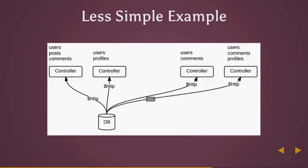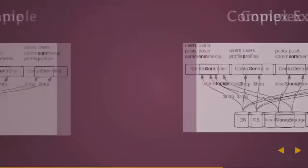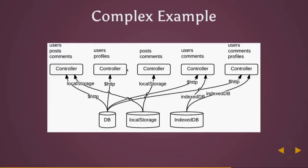As this example app grows in complexity, you're adding various combinations of different resources displayed in different views. Here's a definitely more complex example: not only do we have five different routes displaying different combinations of models, we have different data sources — HTTP to communicate with the back end, local storage, and IndexDB. Maybe we're trying to use some sort of offline functionality. Each controller is getting messy as it tries to worry about how and from where it's getting its data.